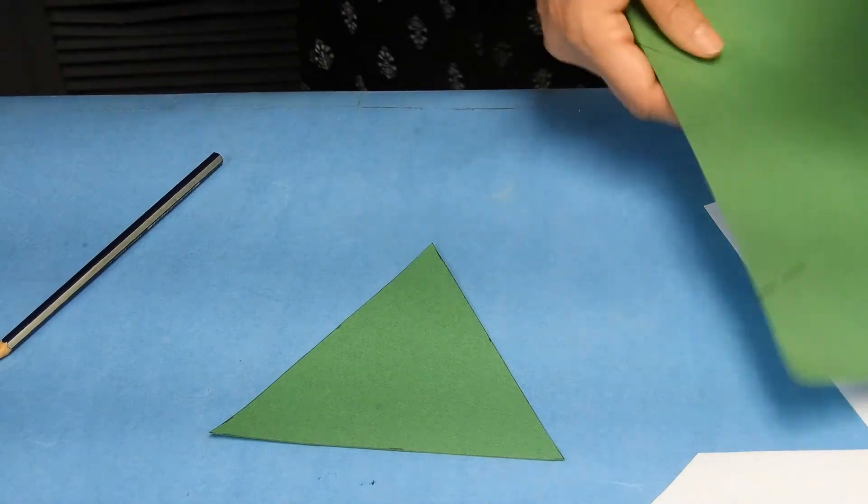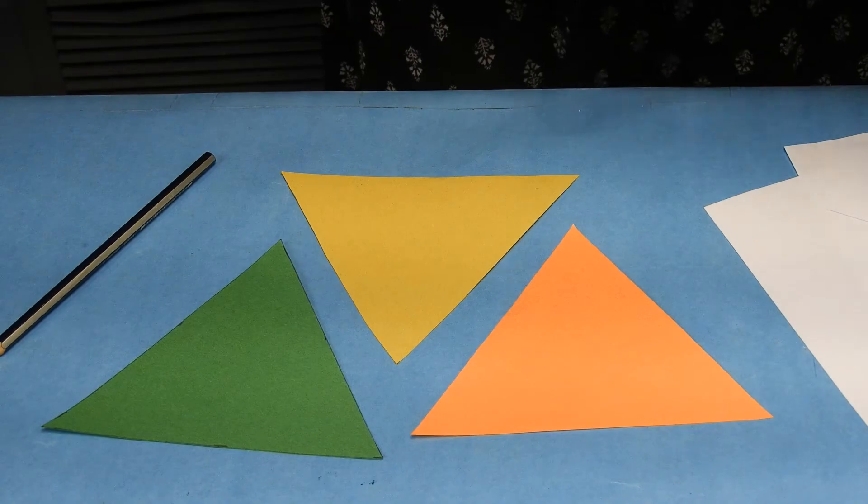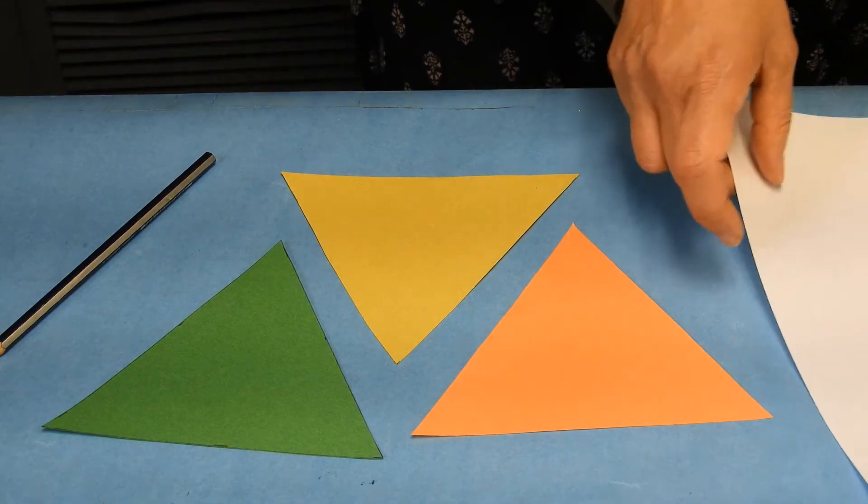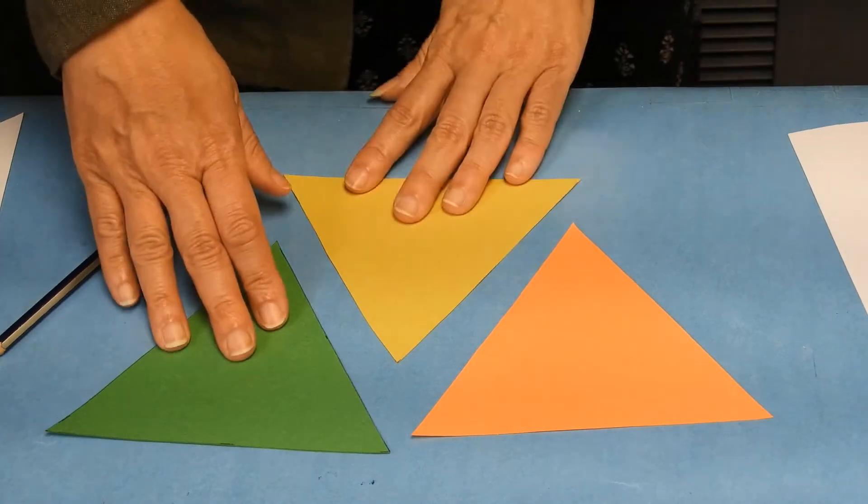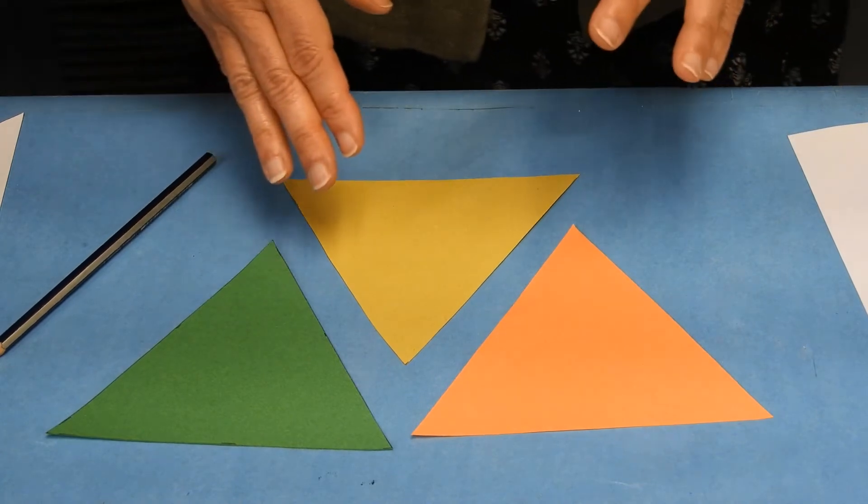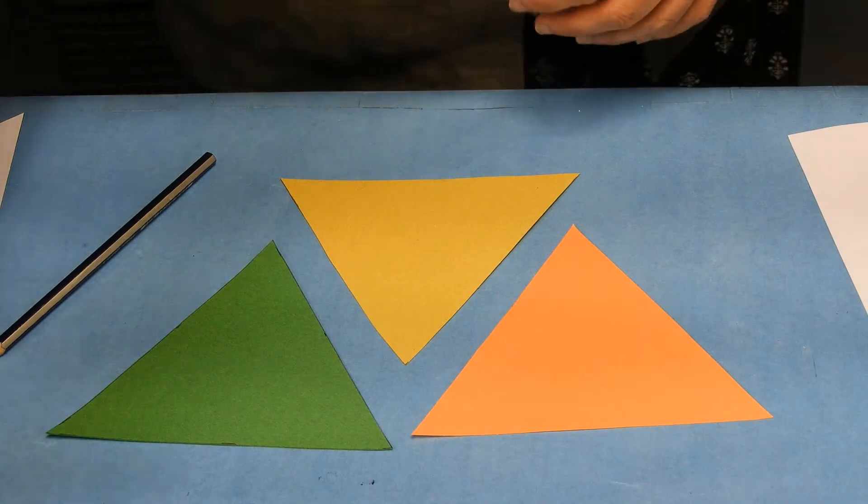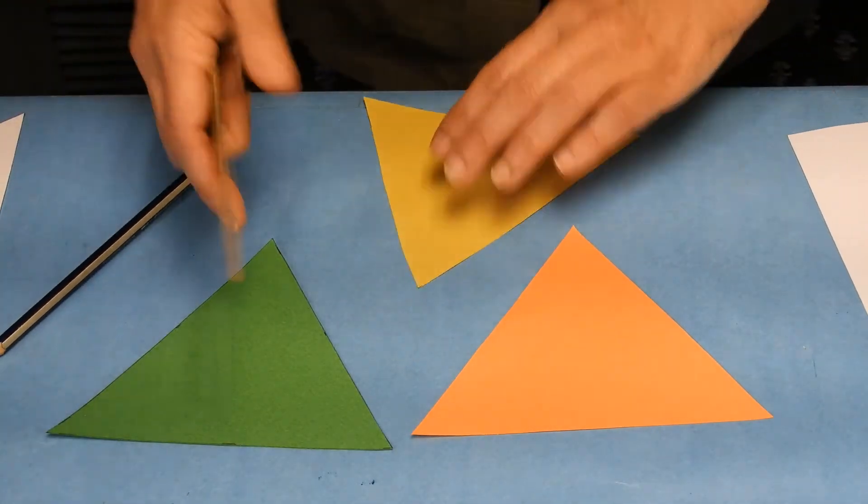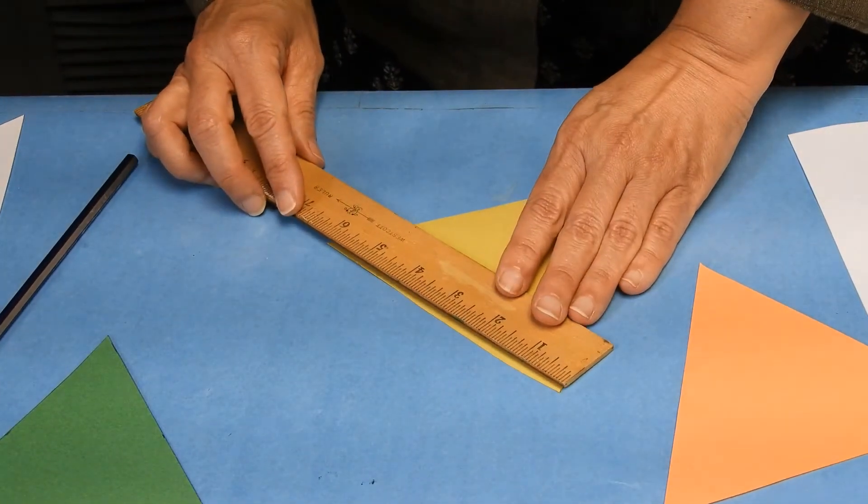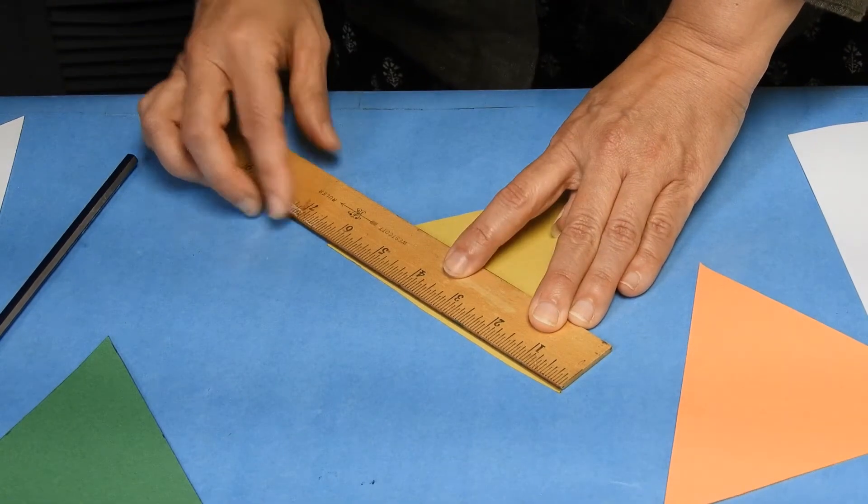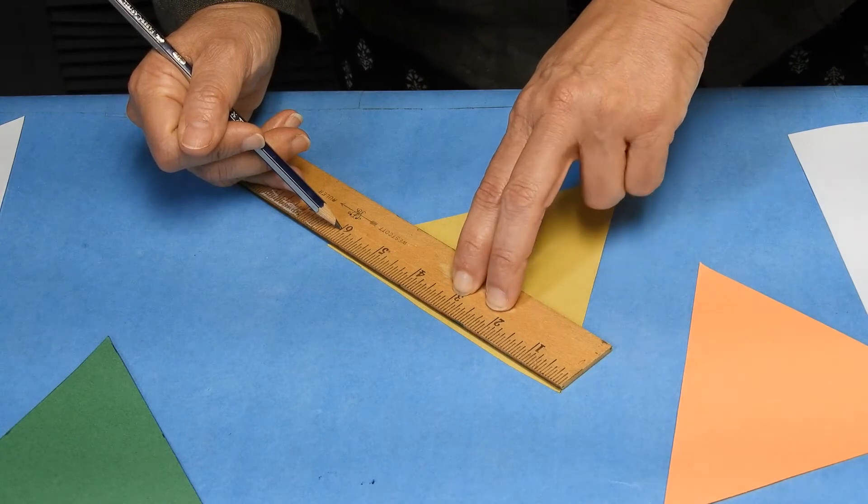So once we have a couple of triangles, and I made a number of different colored triangles, we want to have one triangle that we keep whole, and I kept it white. Then we want to cut because we're going to mark these and create smaller equilateral triangles. So the way we do that is we're going to measure the side of each triangle. So they should be the same. I get to my inches side, and I measure, and my triangle is six inches. So I'm going to go to three because three is half of six, and I make a mark on my triangle.